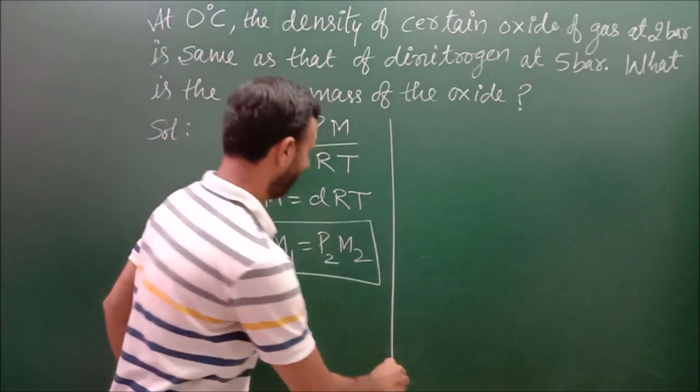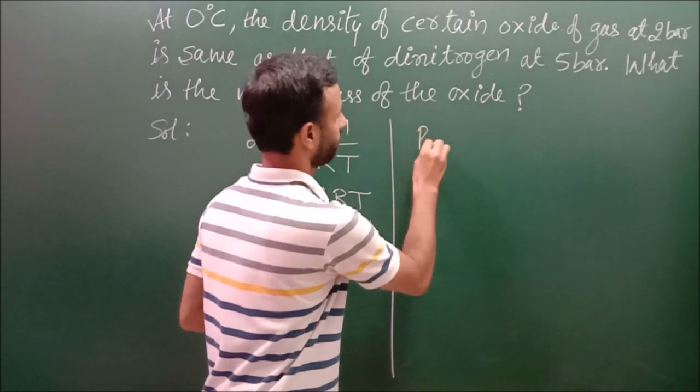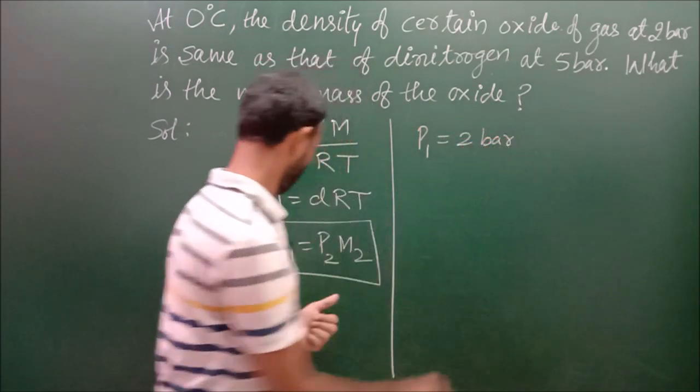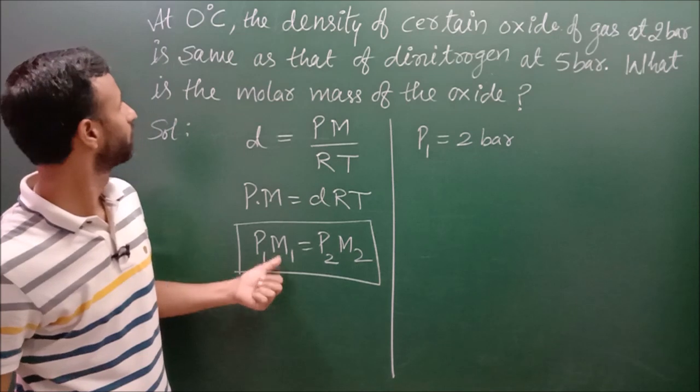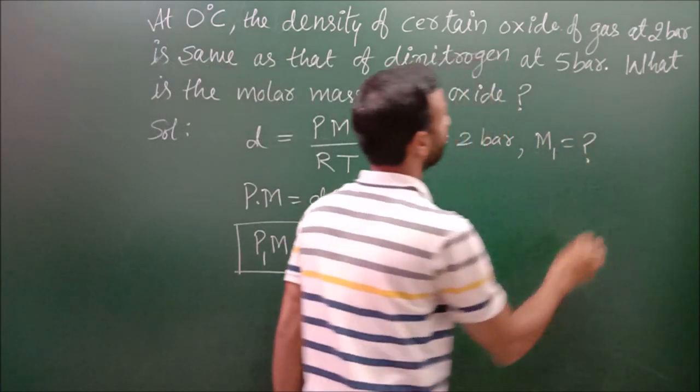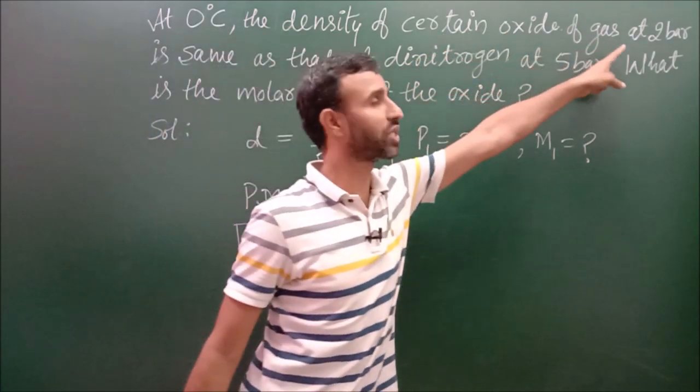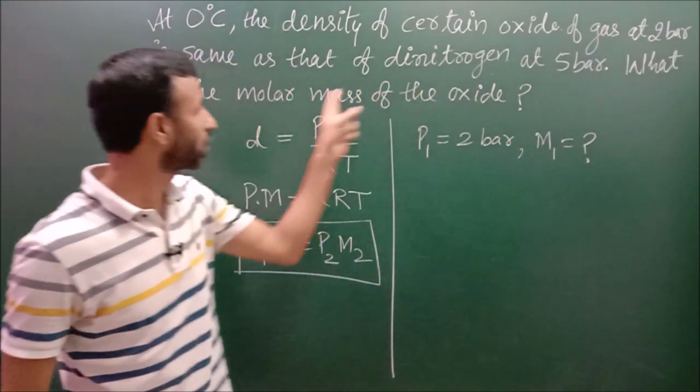So in this way, let us say P1 is 2 bar. P1 is 2 bar and what is M1? M1 we have to find out, because we have certain oxide of gas. Its pressure is 2 bar and we have to find out its molar mass.